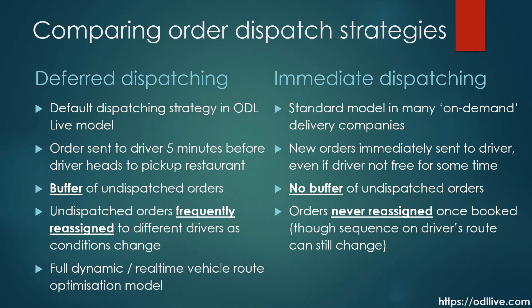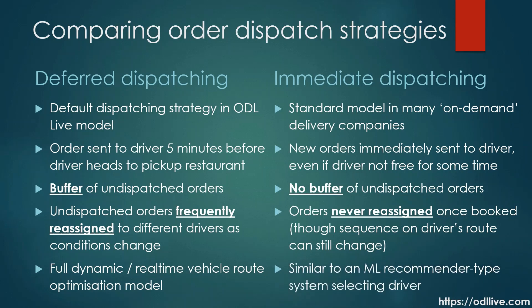Deferred dispatching uses a full, dynamic — aka real-time — vehicle route optimisation model. In contrast, with immediate dispatching, the assignment decisions are made one at a time. As a result, companies who use immediate dispatching often implement this using a machine learning base to recommend a system.